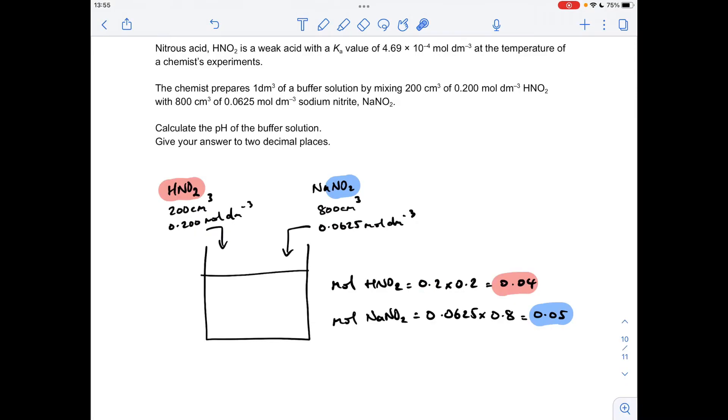Volume in decimeters cubed, 0.2. So we've got that many moles of the acid and again, concentration times volume, that many moles of the NO2 minus ion.